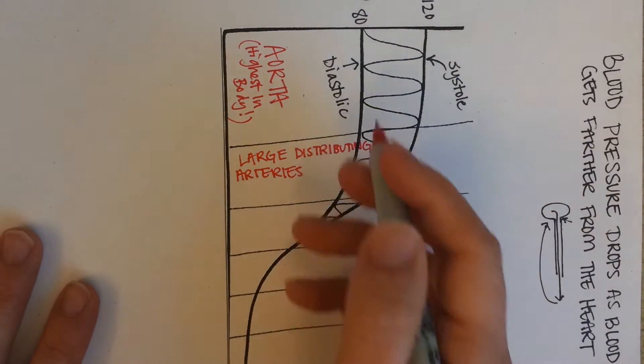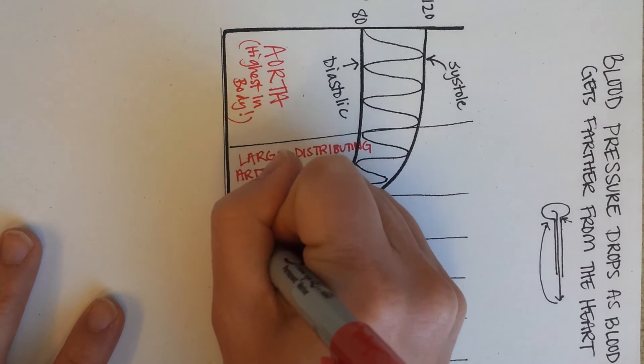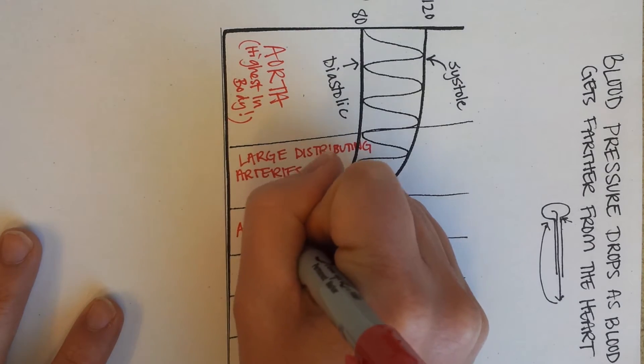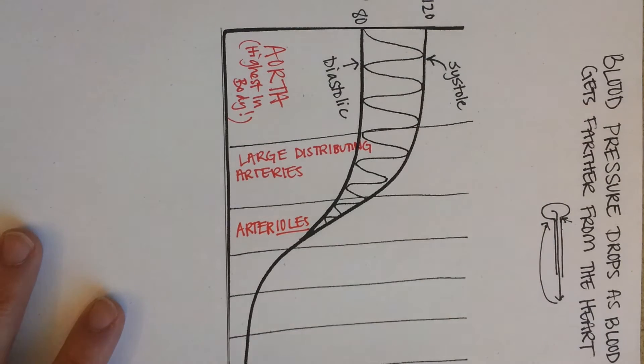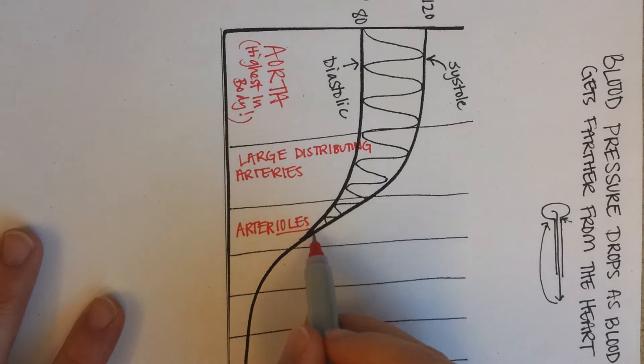And then we get to the arterioles. You hear in that word 'oles' at the end. This means little arteries. And the pulse pressure, this little squiggly line, disappears by the end of the arterioles.